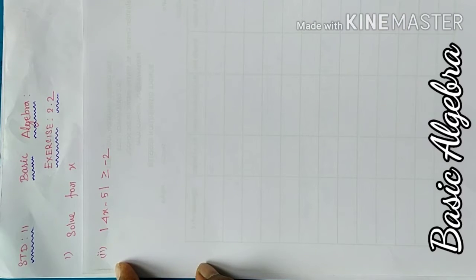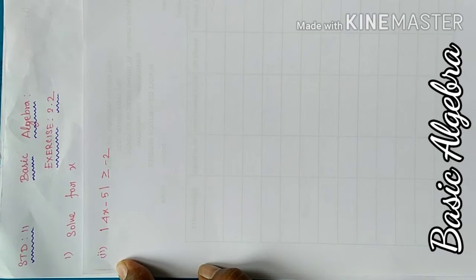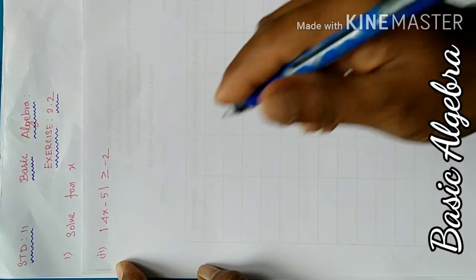Good morning students. Today for 11th standard, chapter Basic Algebra, Exercise 2.2, first question: Solve for x. The equation is |4x - 5| ≥ -2.